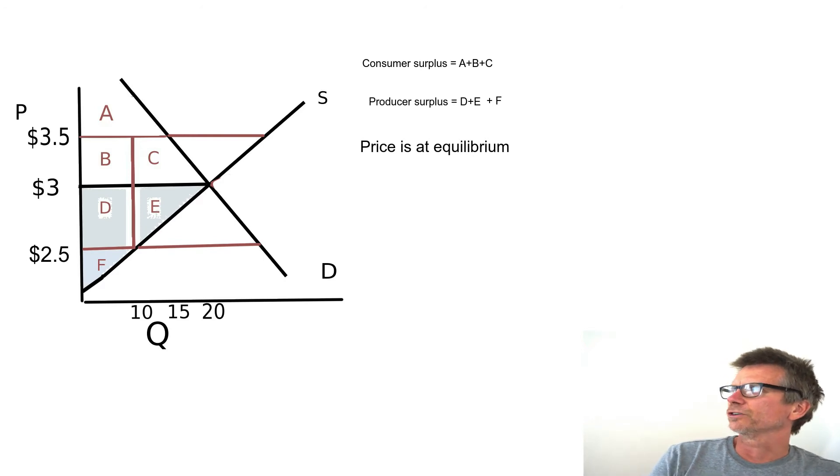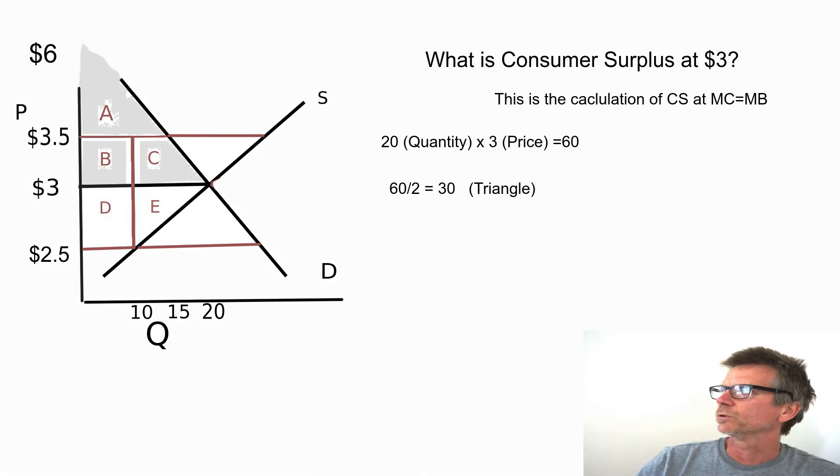Consumer surplus, as you can see, is A plus B plus C. It's the top part of the triangle. Producer surplus is D plus E plus F, the bottom portion of the triangle. And this is at a competitive equilibrium price of $3 and the quantity of 20.